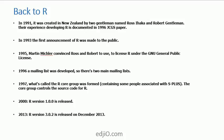R is a relatively recent development. In 1991, it was created in New Zealand by two gentlemen named Ross and Robert. They talked about their experience developing R in a white paper published in 1996 in the Journal of Computational and Graphical Statistics. In 1993, the first announcement of R was made to the public. Martin Mächler convinced Ross and Robert to license R under GNU, which made R free software.